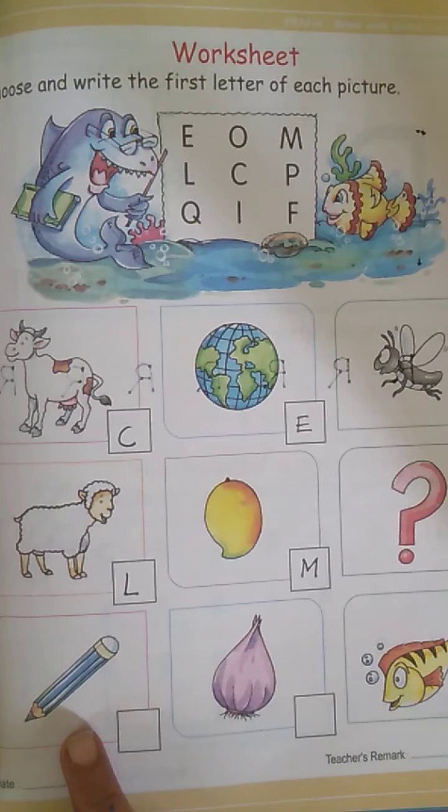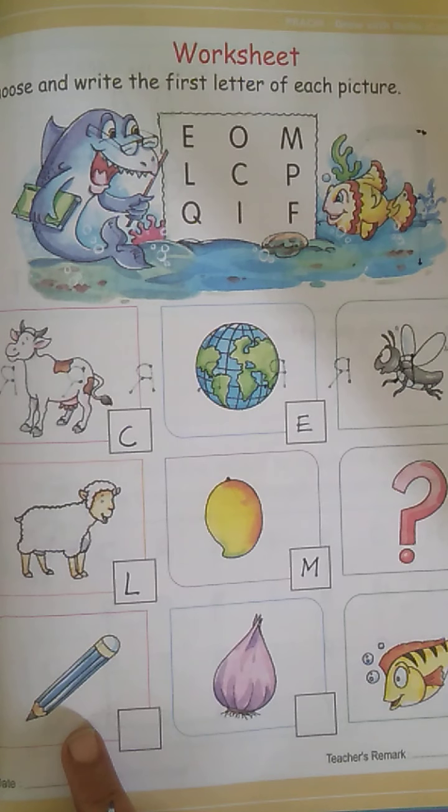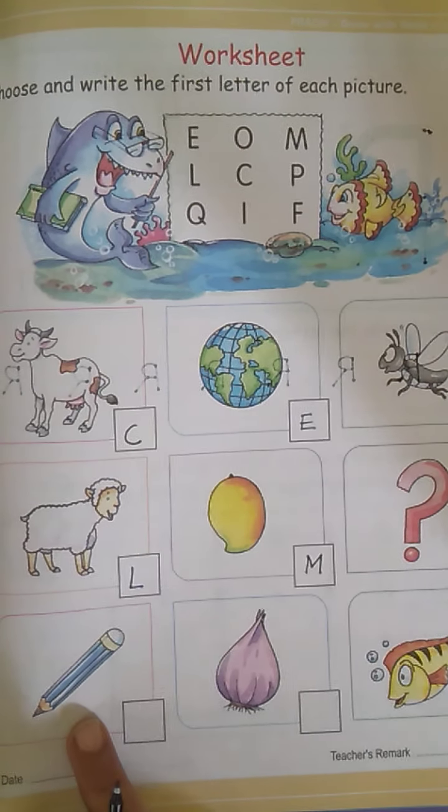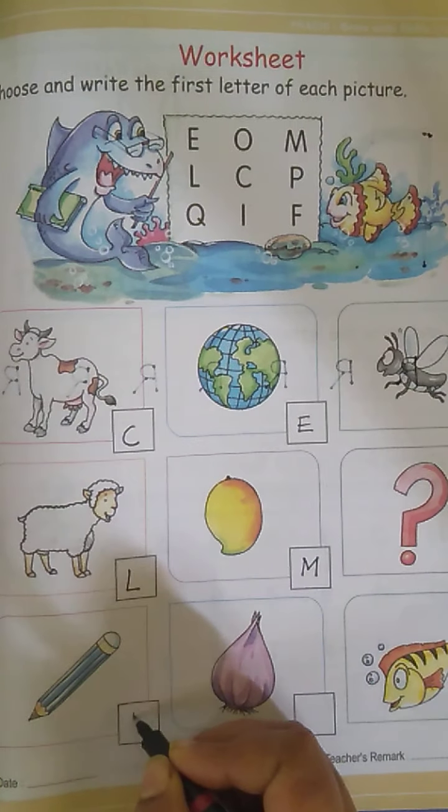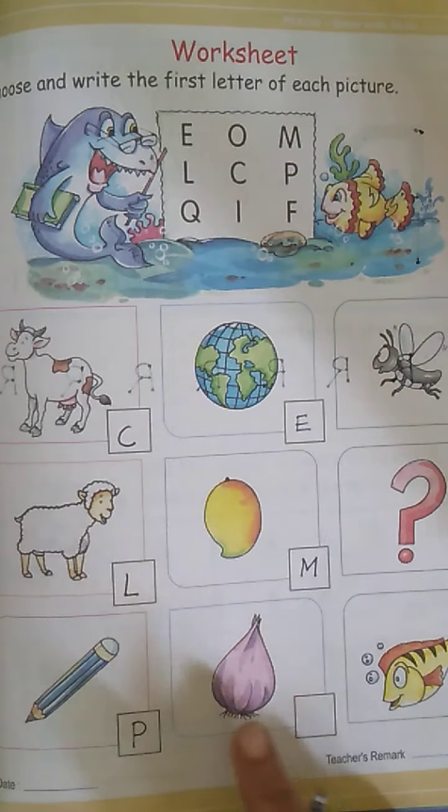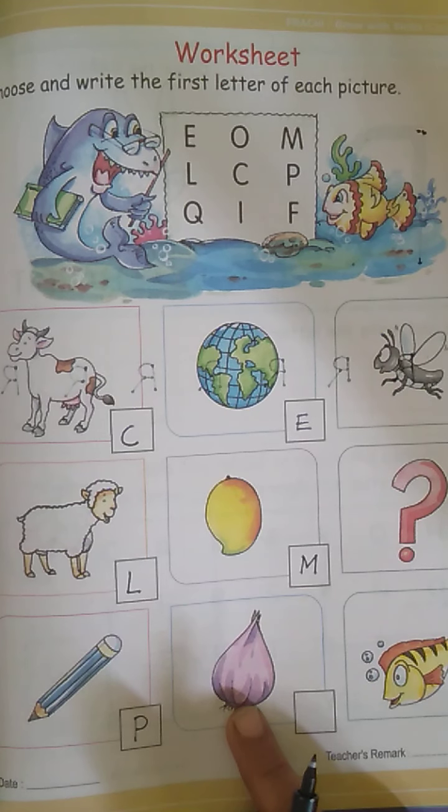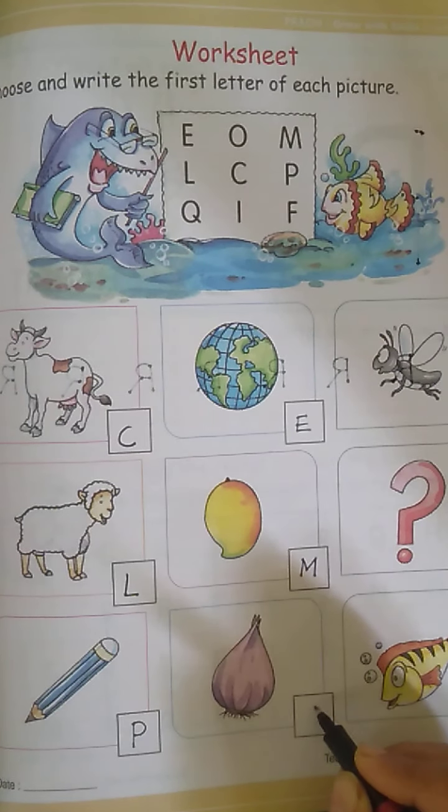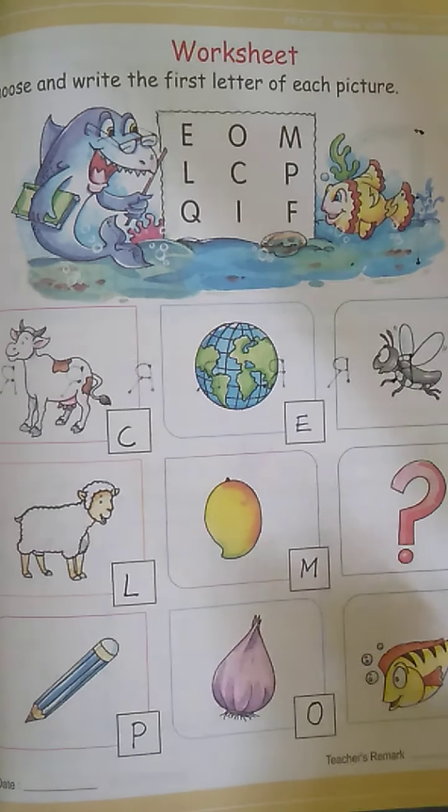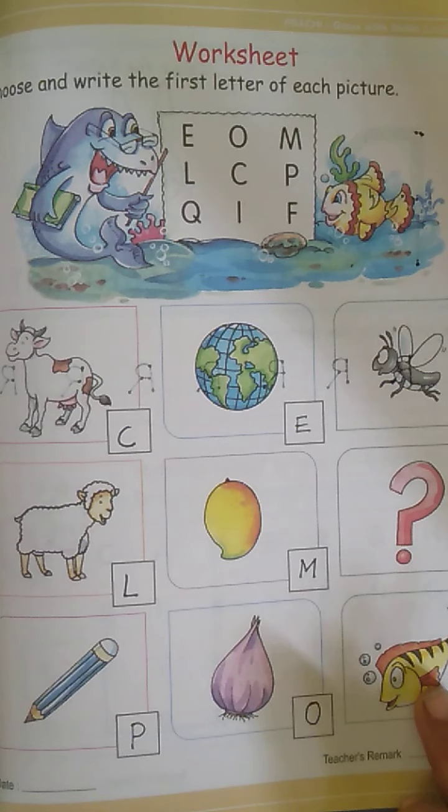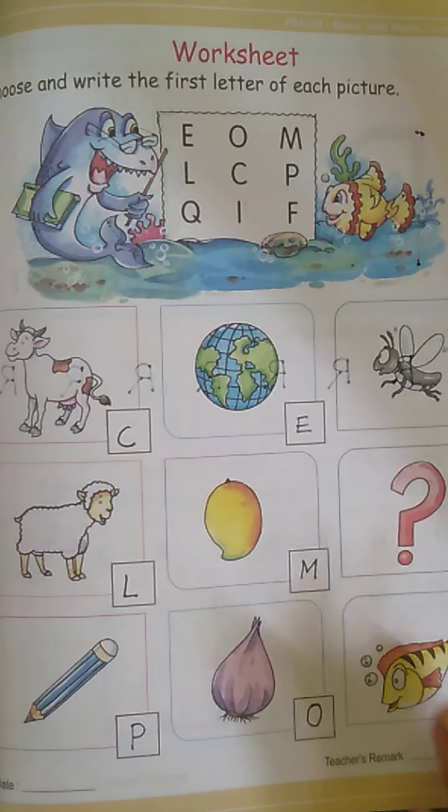And this is a pencil, which you all write, isn't it? What is the first letter for pencil? P. So, write the letter P here. And this is an onion. Onion starts with the letter O. And this is a fish. What is the first letter for fish? F.